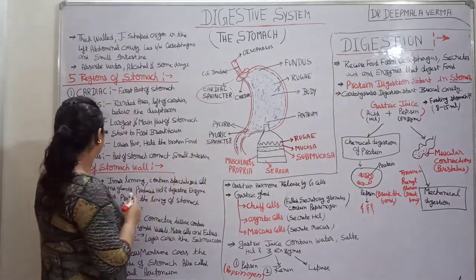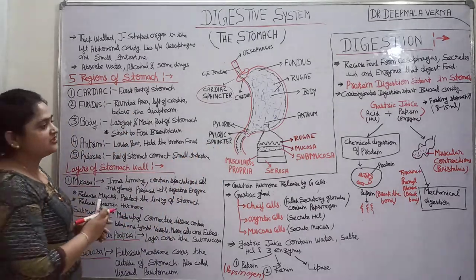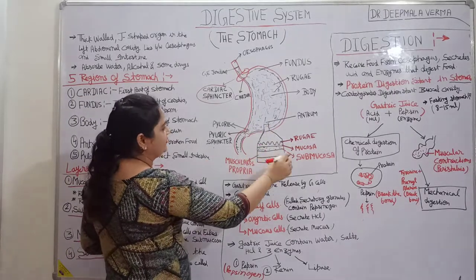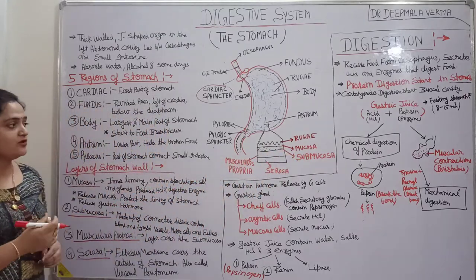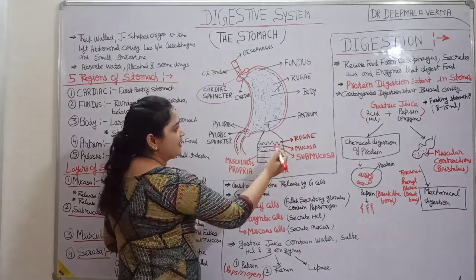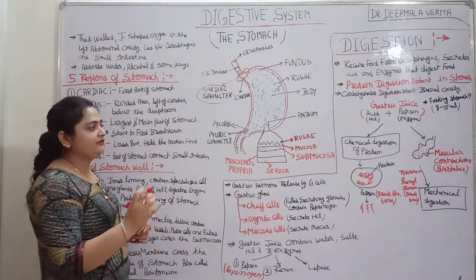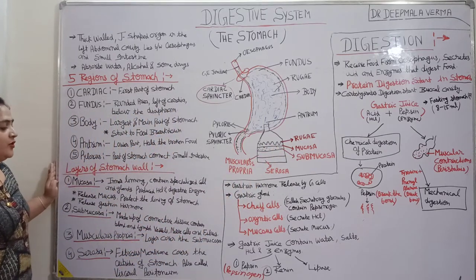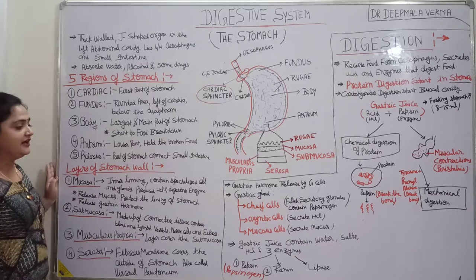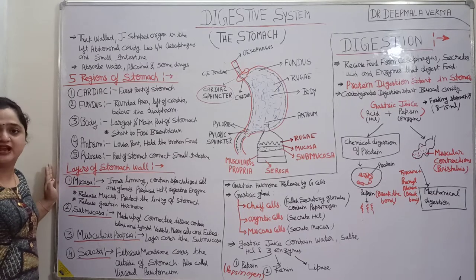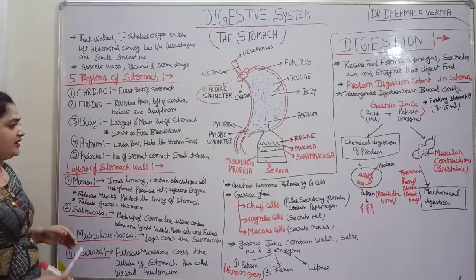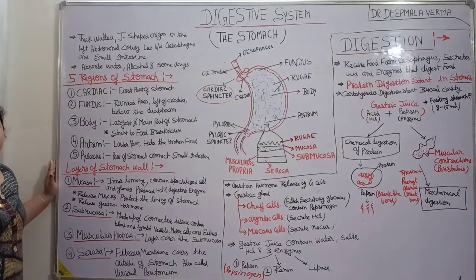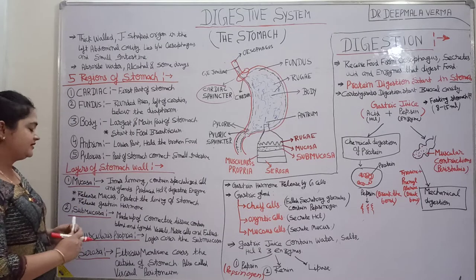Layer of the stomach wall. First, mucosa. In the mucosa layer, rugae are present. When the stomach is empty, rugae are visible; when the stomach is filled with food, the rugae disappear. The mucosa wall is the inner lining, containing special cells and glands that produce mucus and digestive enzymes. The mucosa layer also releases mucus to protect the lining of the stomach from digestive acids.